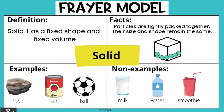Solid. Definition: a solid has a fixed shape and fixed volume. Facts: particles are tightly packed together; their size and shape remain the same. Examples: rock, can, ball. Non-examples: milk, water, smoothie.